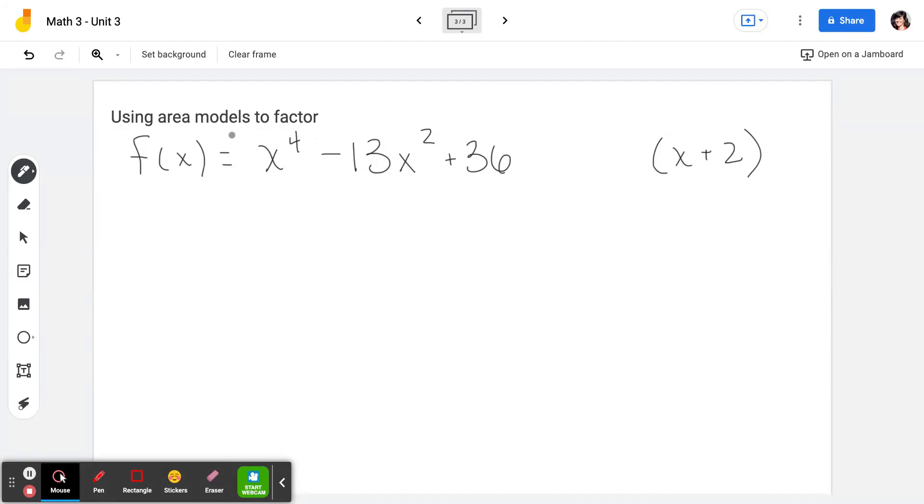When you write a polynomial in standard form, you start with the exponent with the highest degree, which in this case is 4. You'll notice that this polynomial doesn't have a term of degree 3 or a term of degree 1.